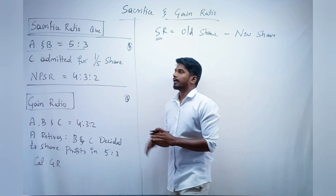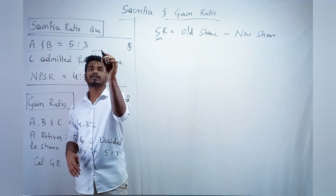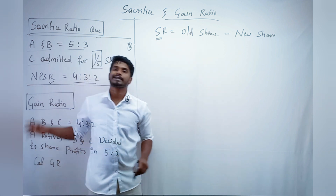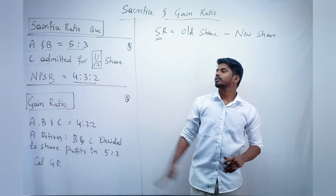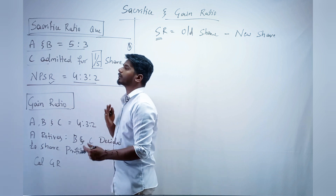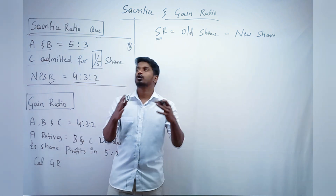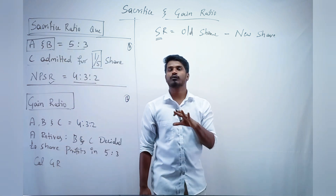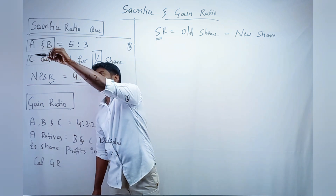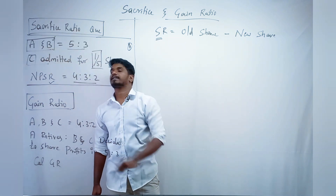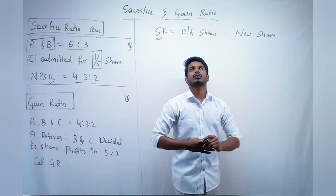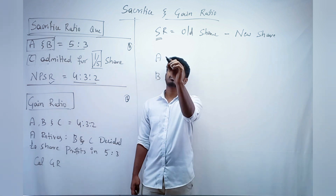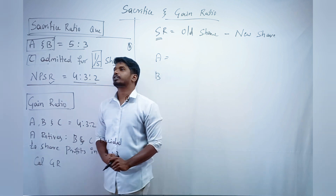A and B are partners sharing profits and losses in the ratio 5:3, and C got admitted for a one-fifth share. The new profit sharing ratio is given as 4:3:2. Now, to whom do we need to calculate the sacrifice ratio? The two old partners — A and B — because they are sacrificing their profit for C.